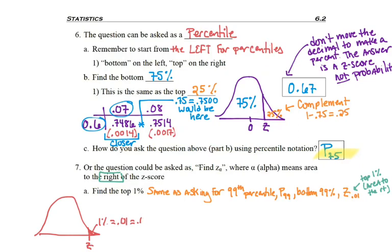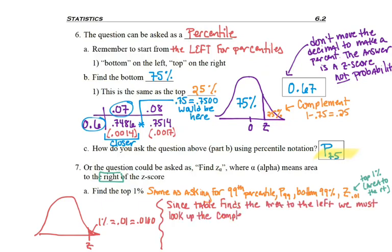If I drew my curve and I wanted to find the top 1%, which is a decimal as .01, or .0100 to see it as a four-digit number. Keep in mind, the table finds area to the left. That means we're going to have to look up the complement to find area to the right. I'm going to have to take 1 minus .01 to get .99. That's the number I'm going to look for in the middle of the table.